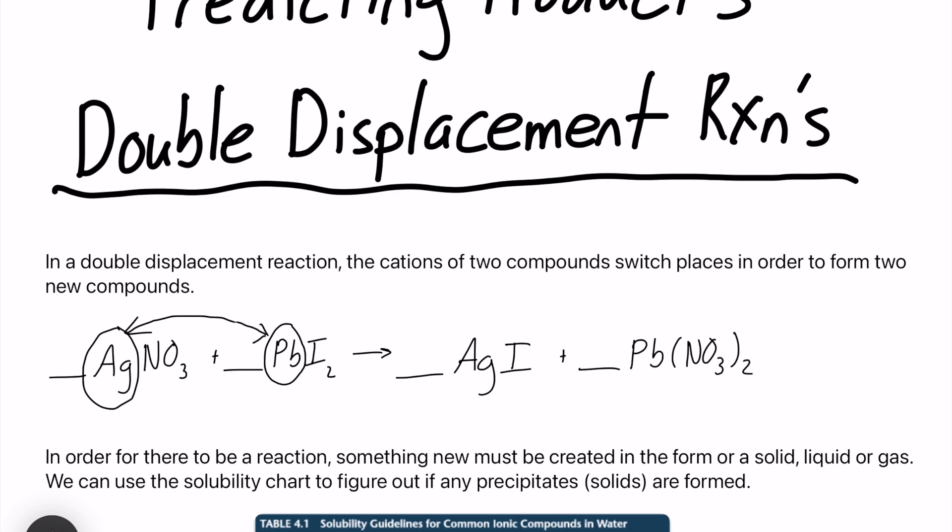And the last step is just to balance this quickly. So let's go ahead and do that. So we have two silver iodide, two silver nitrate. We are going to have one lead-2 nitrate and one lead-2 iodide. That looks good to me.